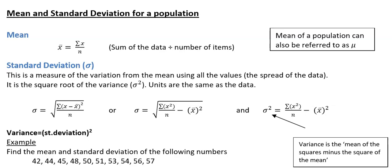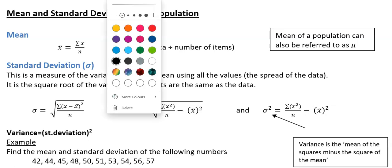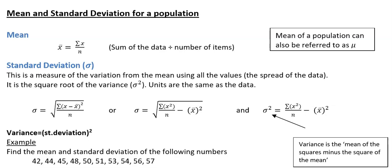First, the mean. We should know the mean already from our normal GCSE mathematics. The mean, also written as x̄ (x bar), is equal to Σx over n. Σx means the sum of all the data values added up, divided by n, which is the number of data values.